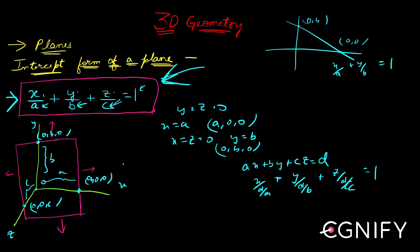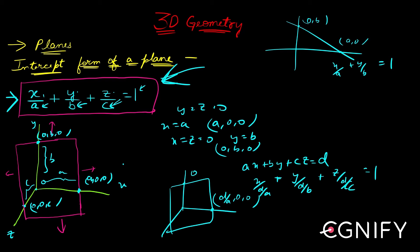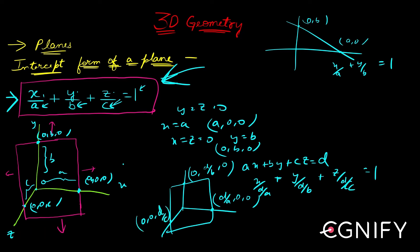Once converted, the plane strikes the x-axis at (d/a, 0, 0), the y-axis at (0, d/b, 0), and the z-axis at (0, 0, d/c). You can always convert a general plane equation into intercept form this way. This is all about the intercept form of a plane. Let's move on to the equation of a plane passing through two parallel lines.